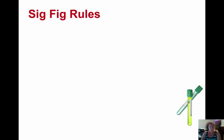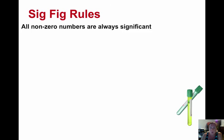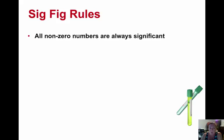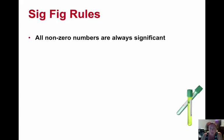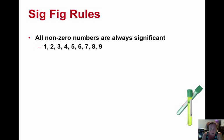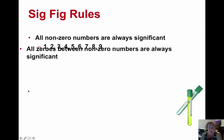So let's talk about some rules for sig figs. The first rule is that all non-zero numbers are always significant. If it's not a zero, it is significant. All the regular digits, one through nine, are always significant.